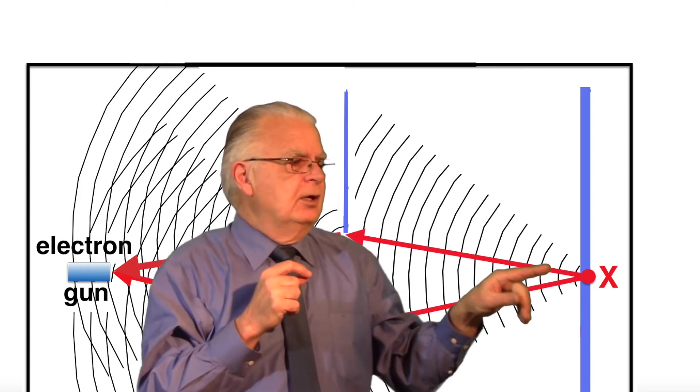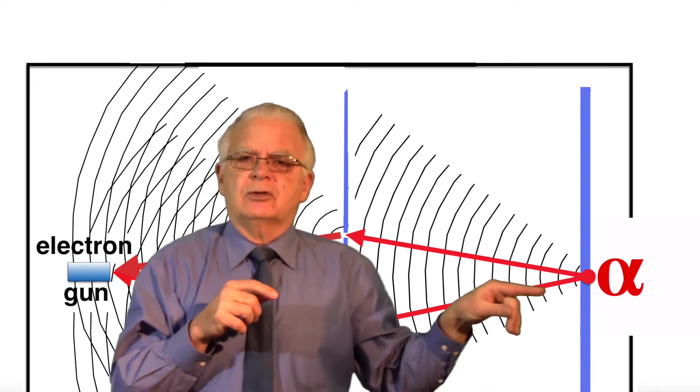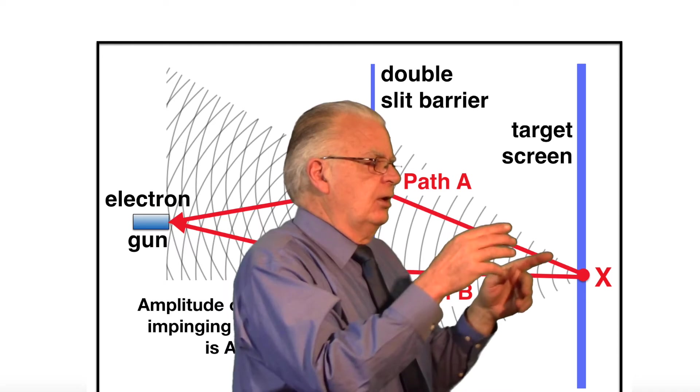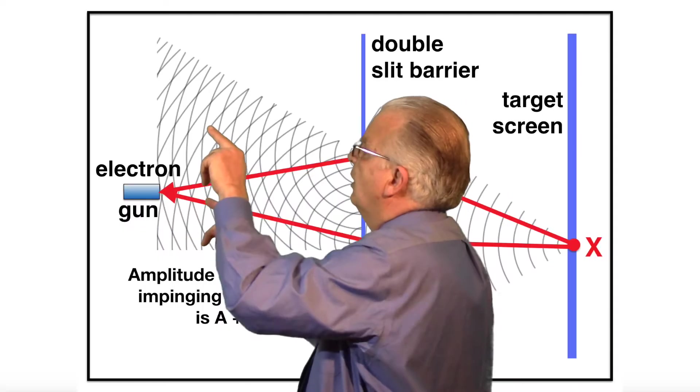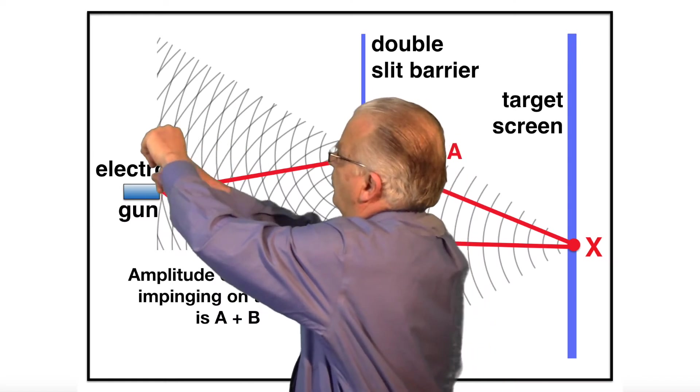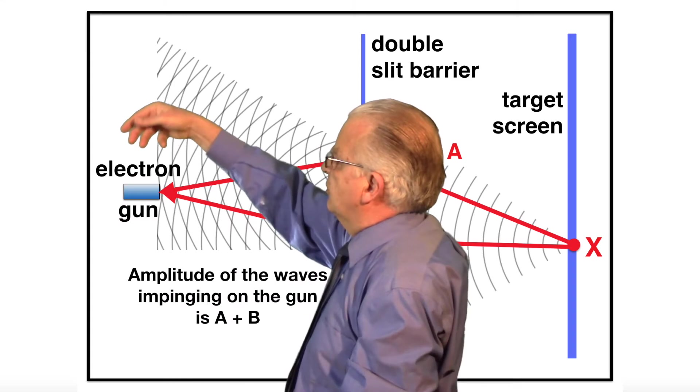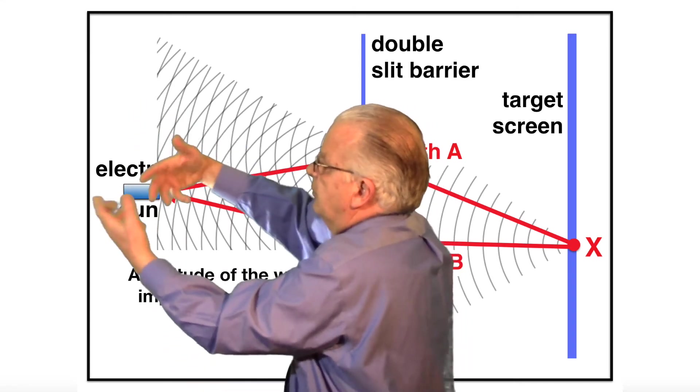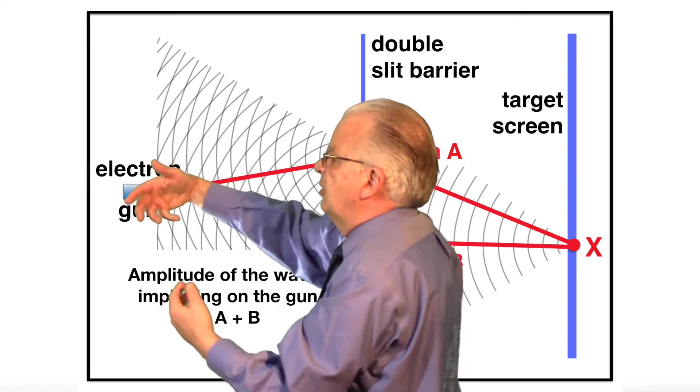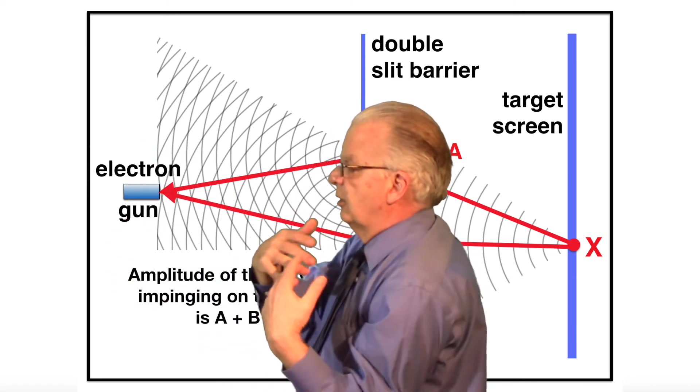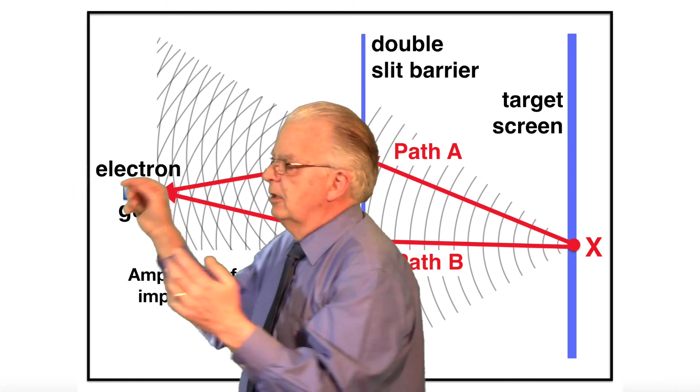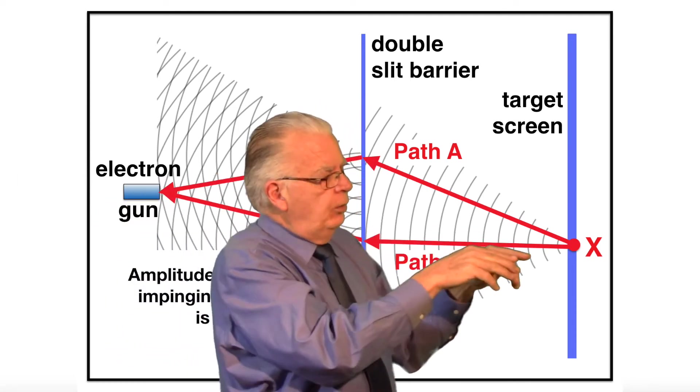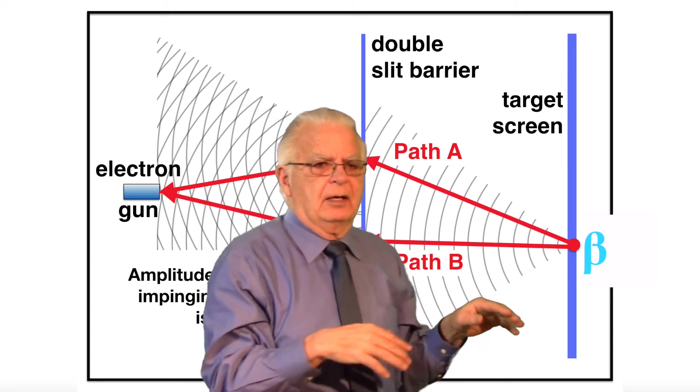And hit the target screen at exactly that point from which its wave is coming. If, on the other hand, X on the target screen is slightly lower than the center of the screen, then there's more distance from X to the upper slit than to the lower slit. So they're out of phase as they go through, and there is destructive interference in proximity to the electron gun. All of the interference in elementary wave theory is in proximity to the electron gun. None of it is in proximity to the screen.